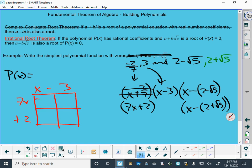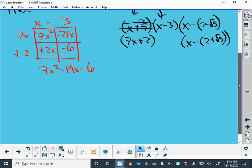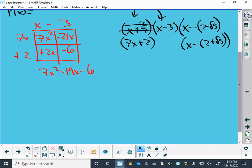So I get a 7x squared minus 21x plus 2x and a minus 6, and so that gives me a 7x squared minus 19x minus 6. Now, I could bring in one of these other ones, but the nature of these kinds of roots is that if I multiply those together, I should end up with things that don't have the square roots in them anymore.